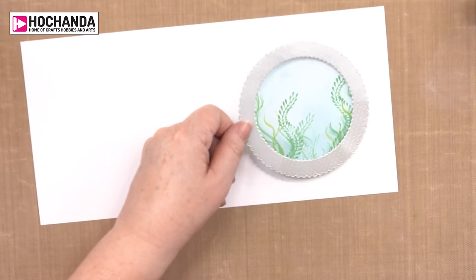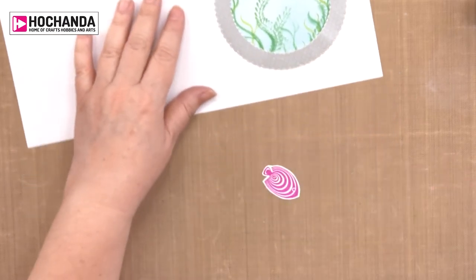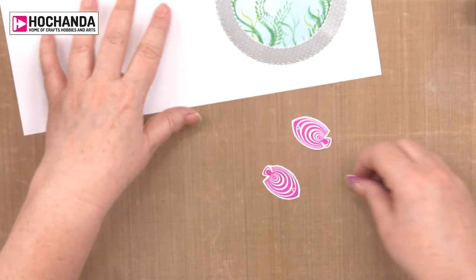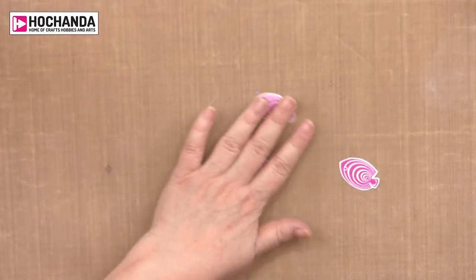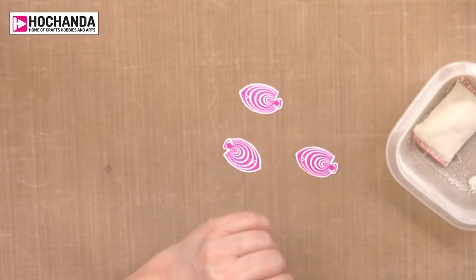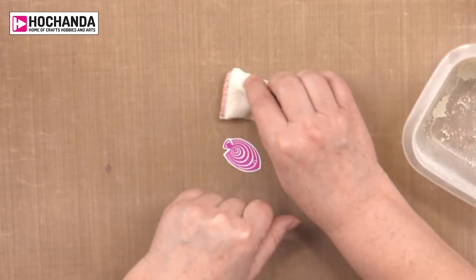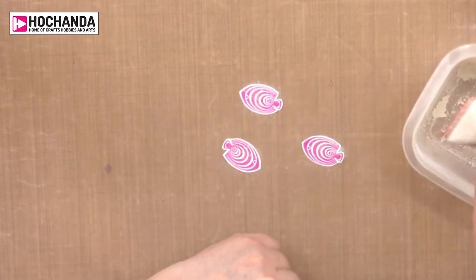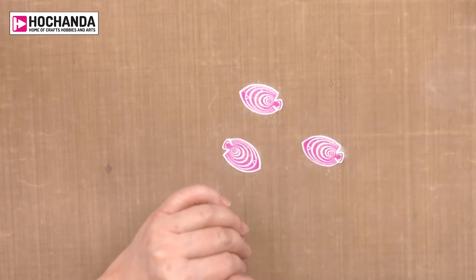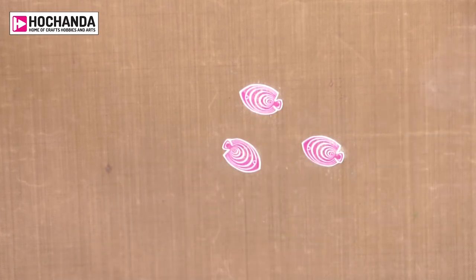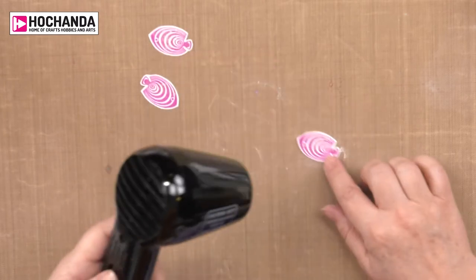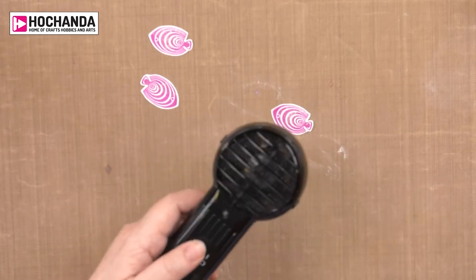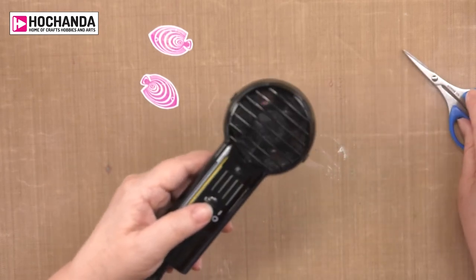Now we need some fish to shrink. I would always recommend using an anti-static bag if you have one when you're shrinking. Just a little tap on each thing. Not so difficult with these little guys but if you're doing something bigger or has thin areas they can curl up. That always helps to stop them sticking.